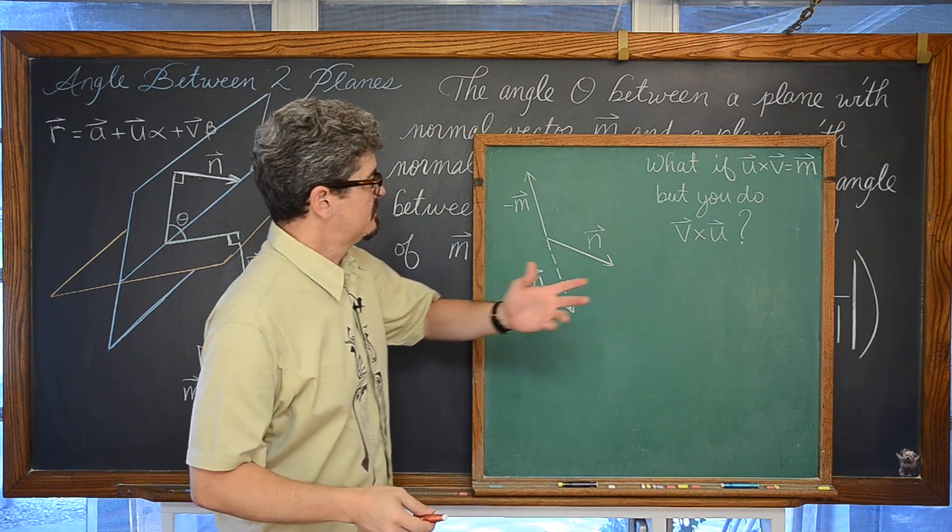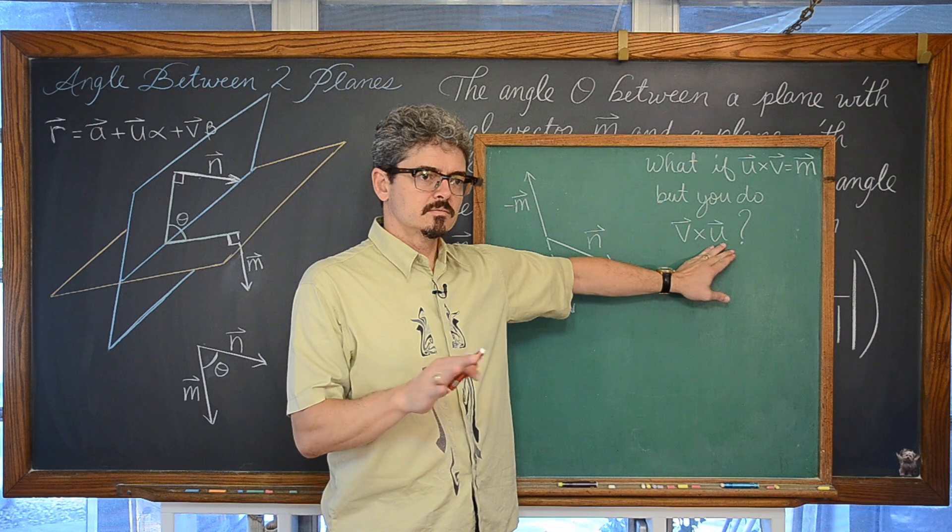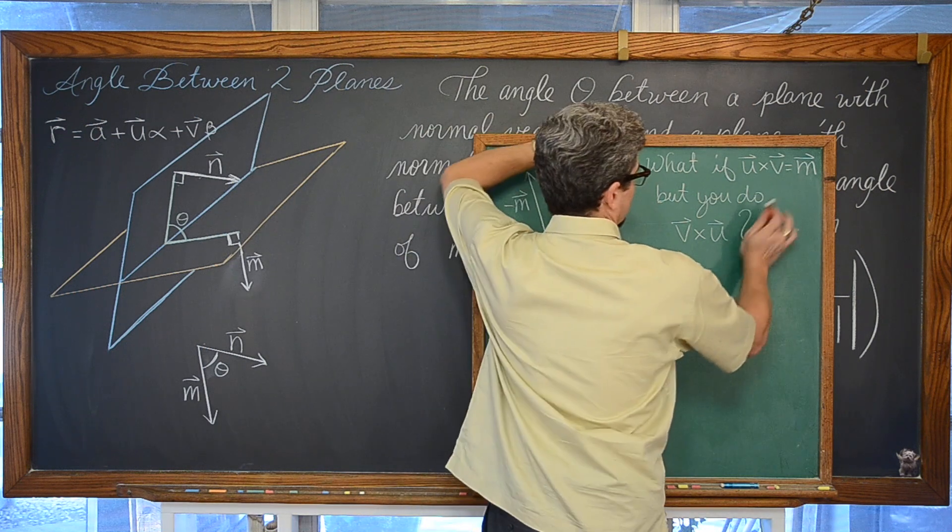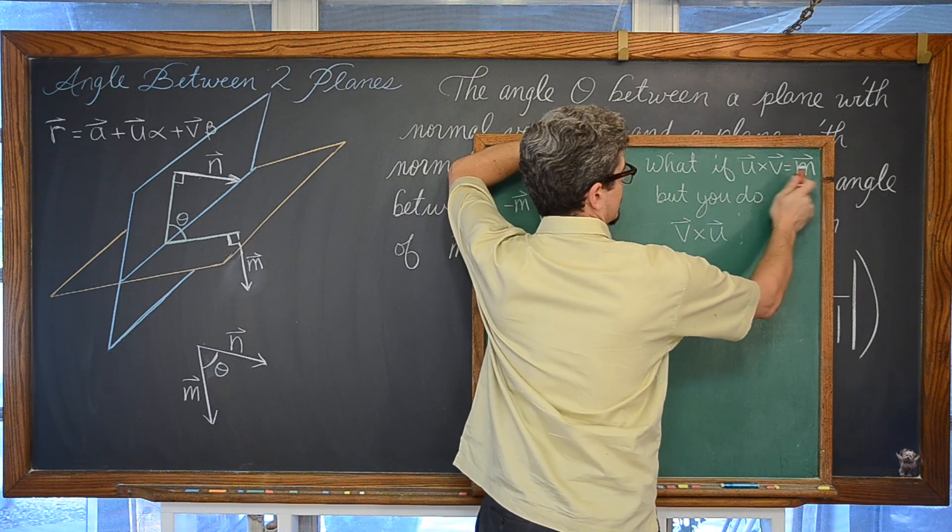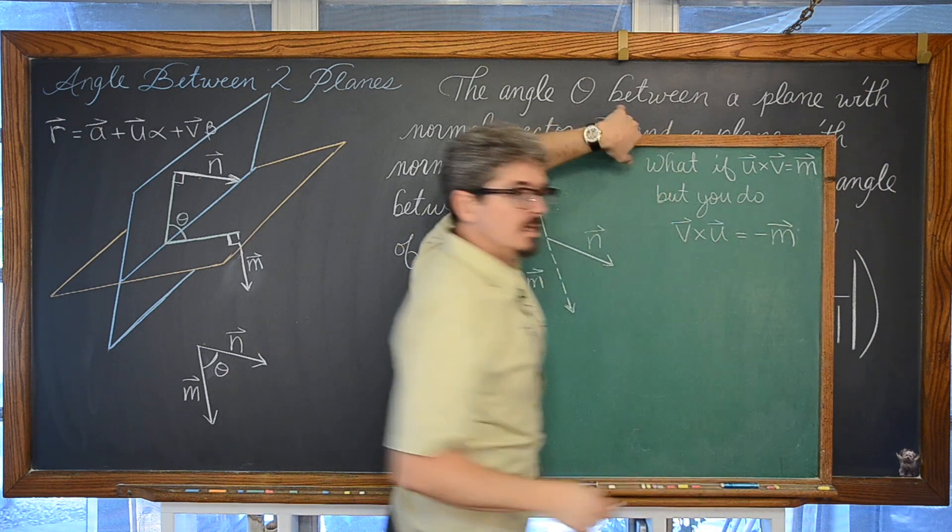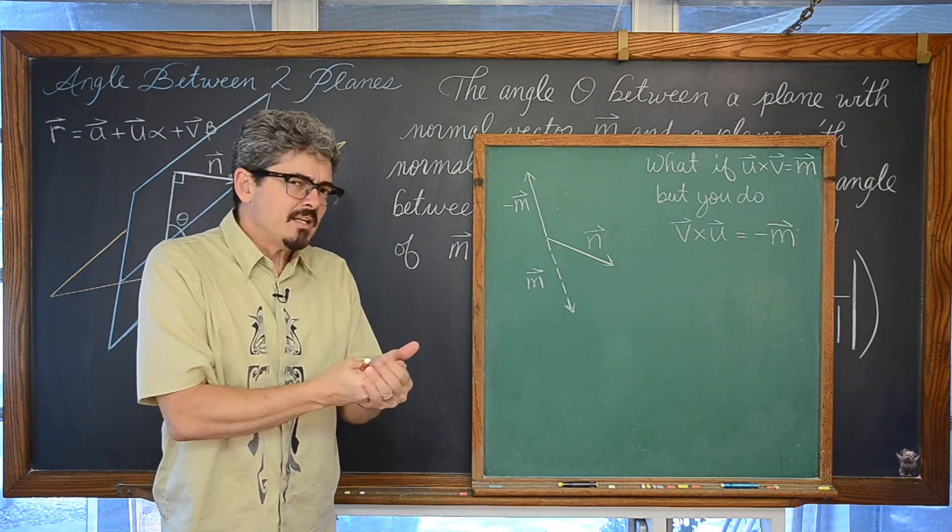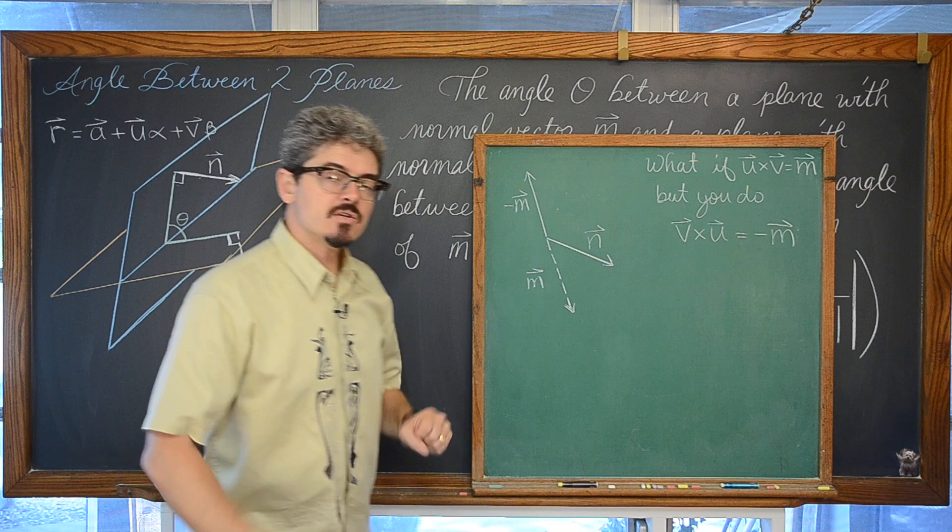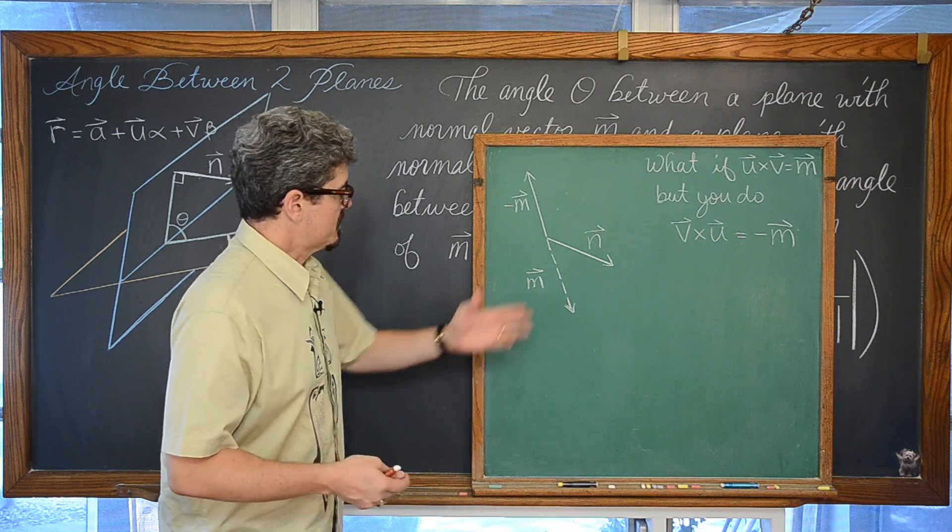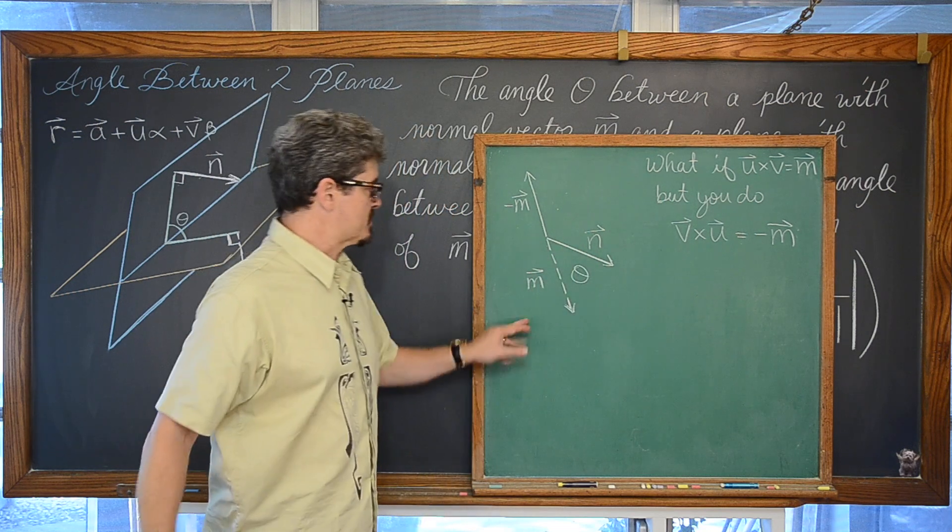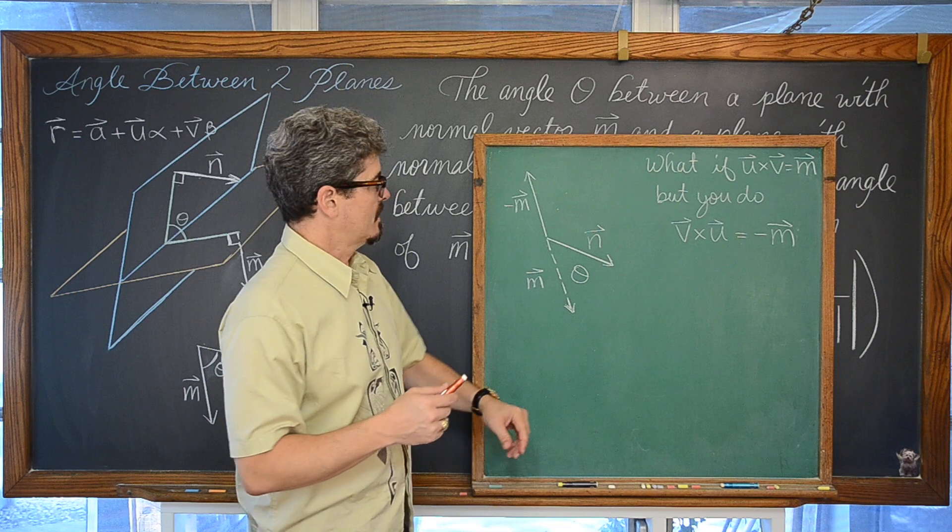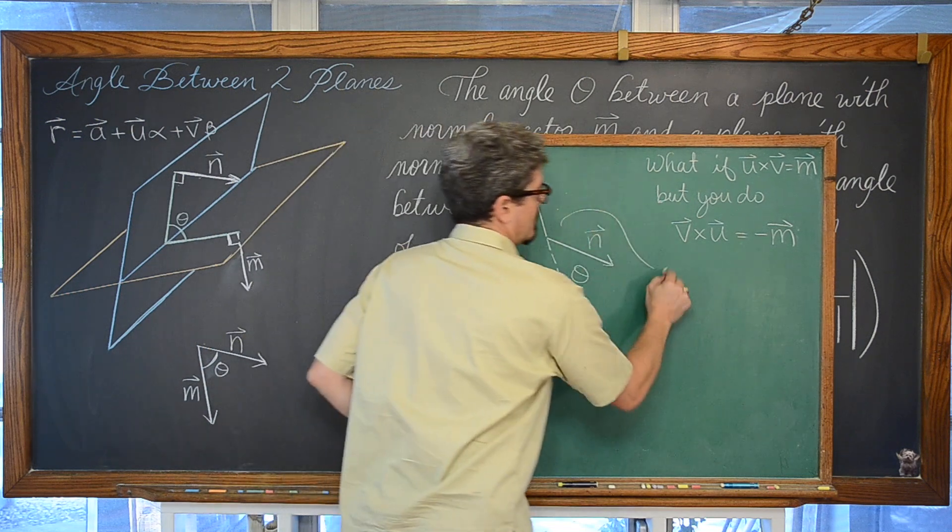We know that the cross product is not commutative, right? If I have that the cross product of vector u and vector v is vector m, then if I change the order, I'm going to get an opposite vector. That's mainly why the absolute value functions are in that equation. If we were looking for that acute angle between those two planes, if we take an opposite vector, we're just simply going to get the obtuse angle.